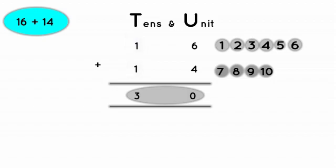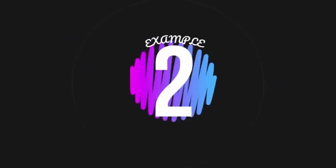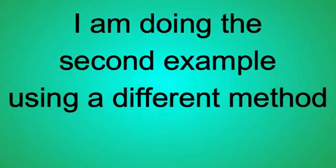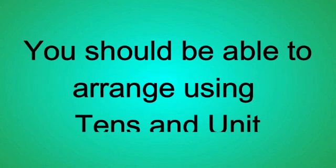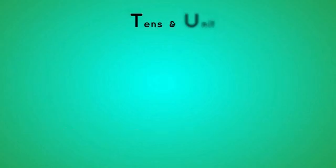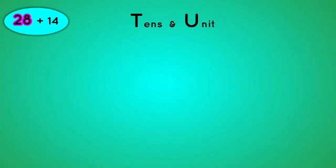Let's take example 2. For number 2, we have 28 plus 16. Now, I want to do the second example using a different method. I'm sure you know how to arrange using tens and units. Tens, units. Now, let's start from the first number. We have 28. The first digit is always the unit. So we'll write it under units. While the next digit to the left is always tens.